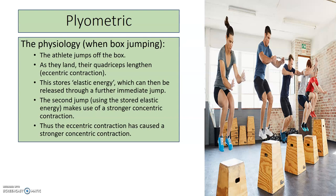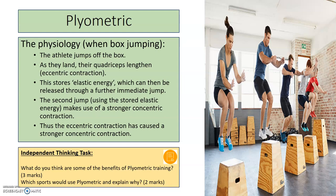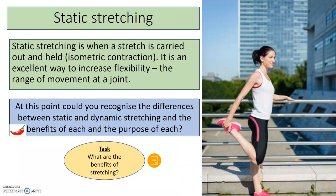Pause the video and think about the benefits of plyometric training and which sporting athletes might use it. Sports that require explosive power include rugby — heading and jumping in a line-out — basketball players for lay-ups and slam dunks, and netball goalkeepers who need to jump to intercept passes and make it difficult for the goal attack and goal shooter.